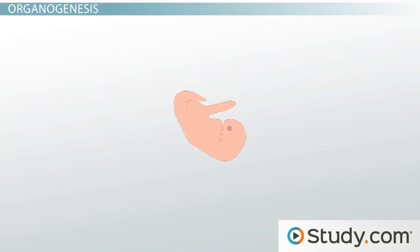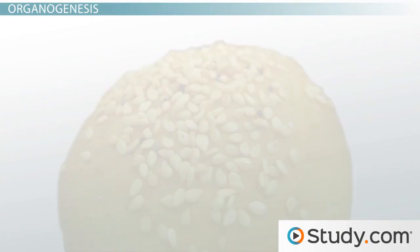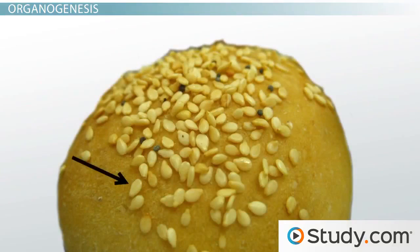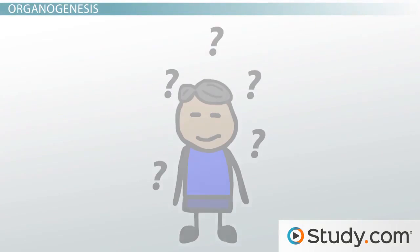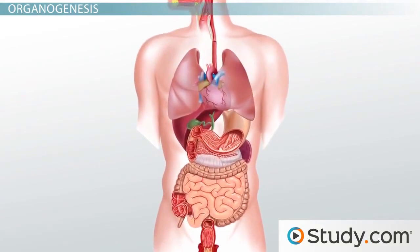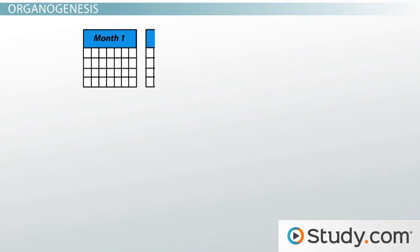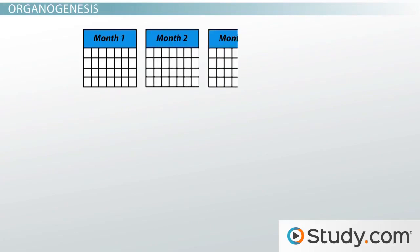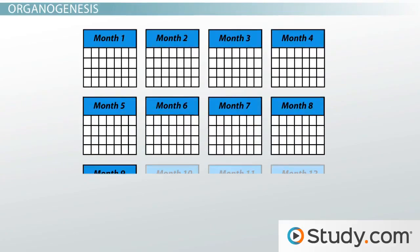This starts as early as five weeks after conception in humans, when the developing embryo is no larger than a sesame seed. We aren't going to go into too many details — after all, organ development can be a very complex topic. Instead, let's take a look at the developmental timeline: when each of the major organ systems in your body develops over those nine months in the womb.